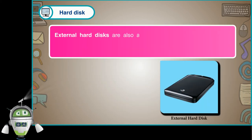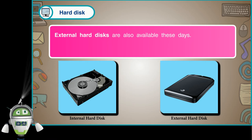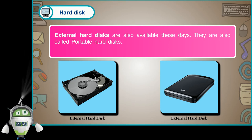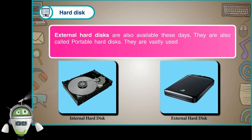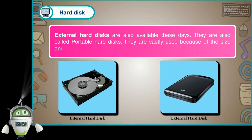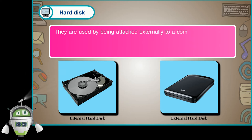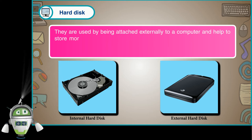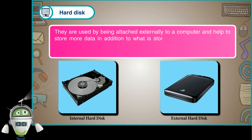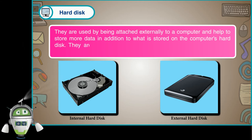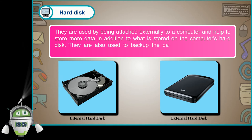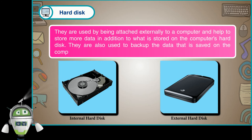External hard disks are also available these days. They are also called portable hard disks. They are used by being attached externally to a computer, and help to store more data in addition to what is stored on the computer's hard disk. They are also used to back up the data saved on the computer's hard disk.